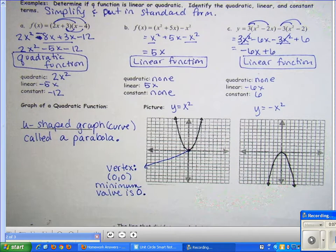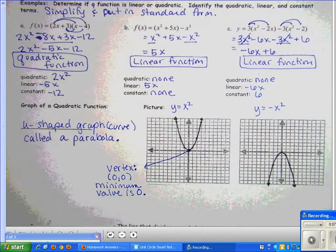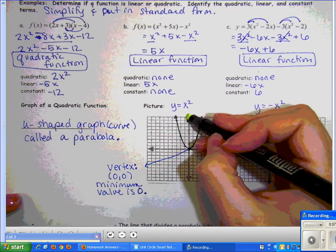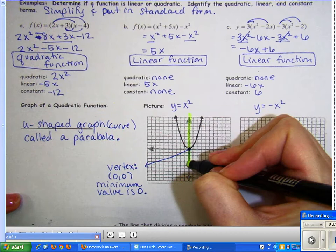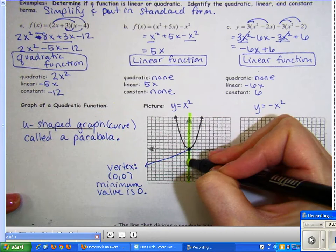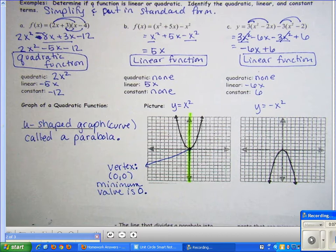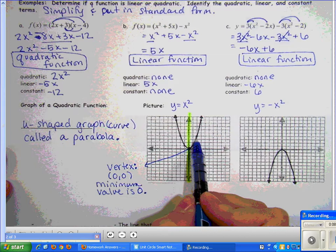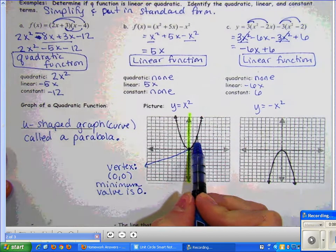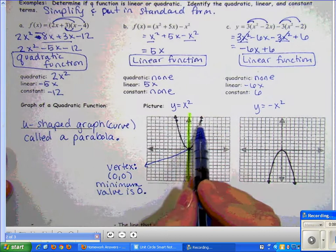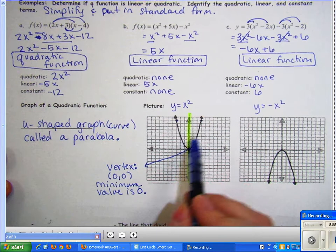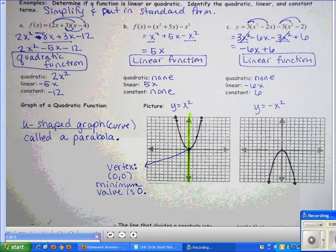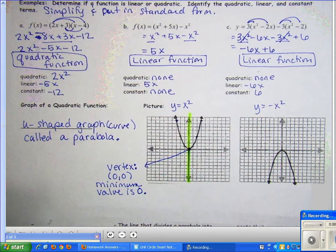If you cut the graph in half at the vertex and fold it on that line, each side matches up with the other. Points that match are called corresponding points — for example, this point would match up with that point on the other side, and you can do this infinitely many times.